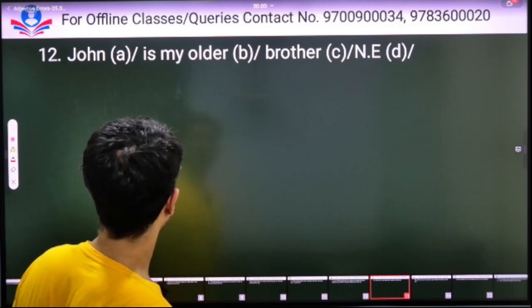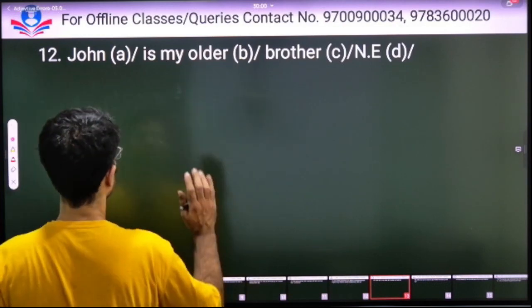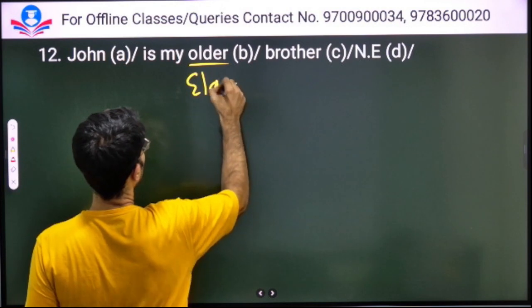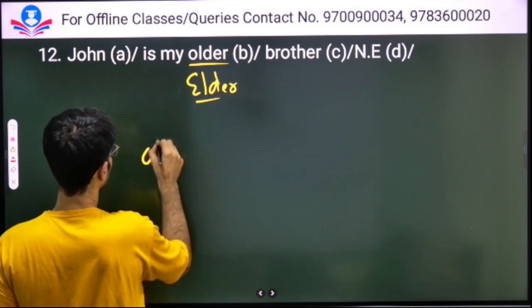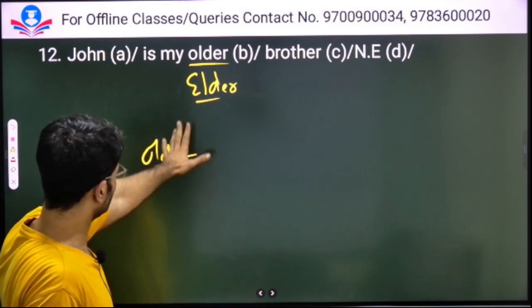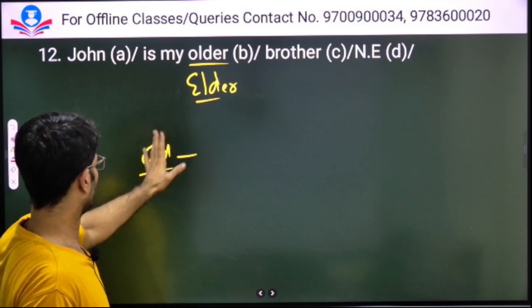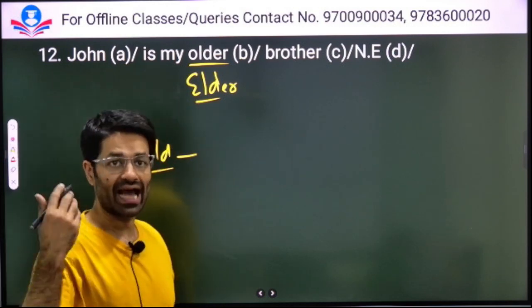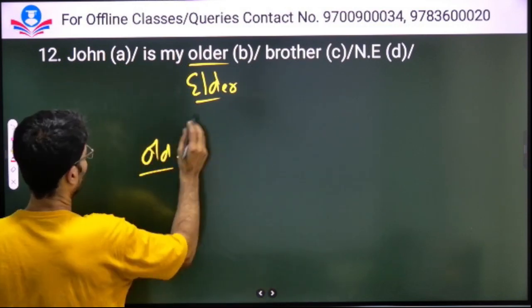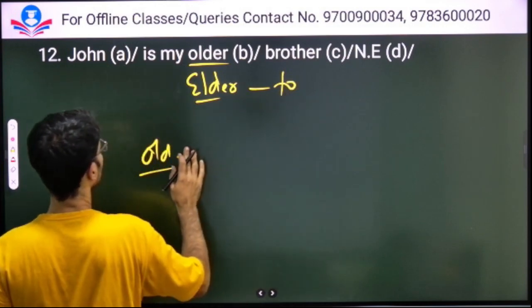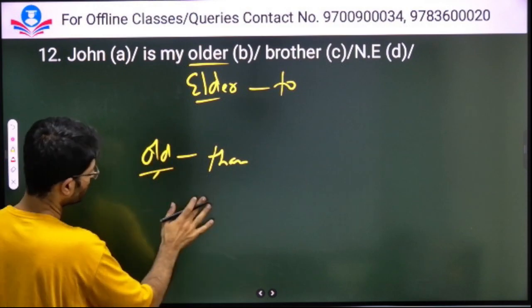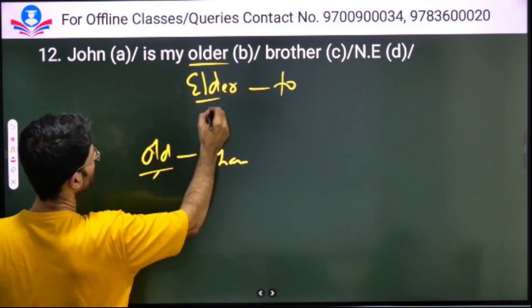John is my older brother. I have told you that when you are in a family, you use 'elder'. In one family, you use 'elder'. Old is for buildings and for people generally. But when you are specifically talking about family, blood relations, you use 'elder'. And 'elder' takes 'to', while 'old' takes 'than'. This building is older than that building.